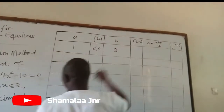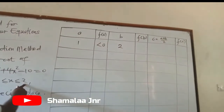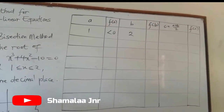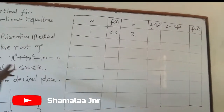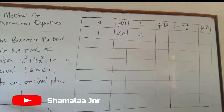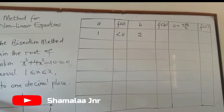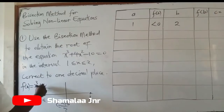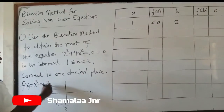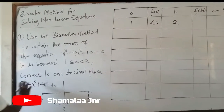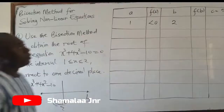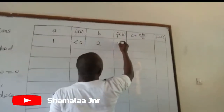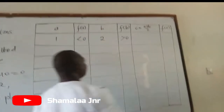Then B = 2. When you put 2 into the function f(X) = X³ + 4X² − 10, the functional value will be greater than 0.